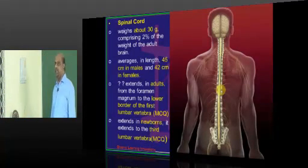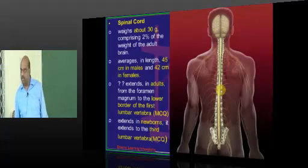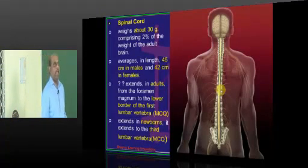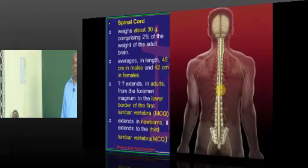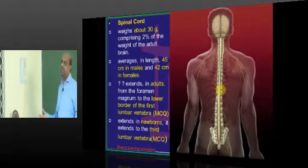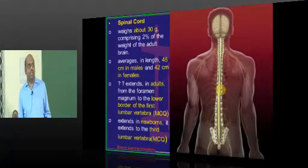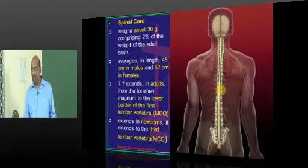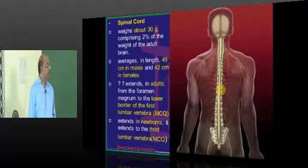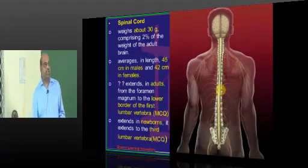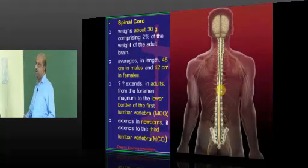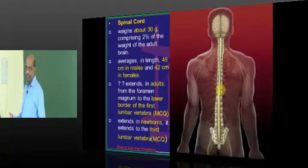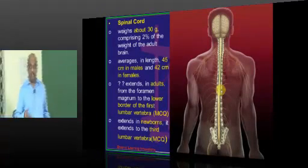In our earlier session we had a review of circulation of the brain, and the structure of the neurology — both brain and spinal cord — we have reviewed in our earlier sessions. Now let us finish up with spinal cord today so that from tomorrow we go to the brain stem, basal ganglia, etc.